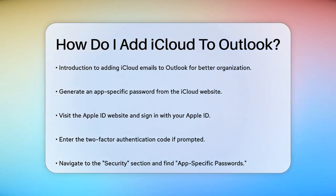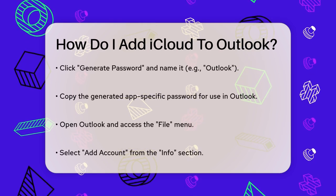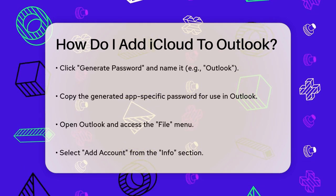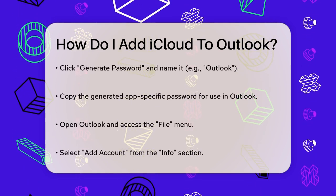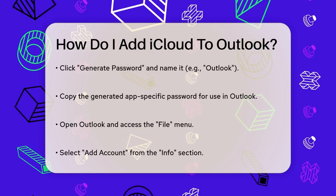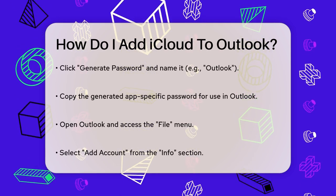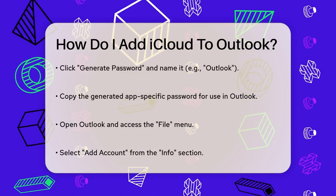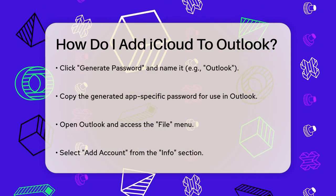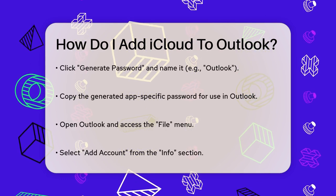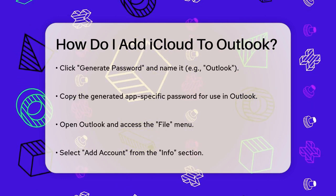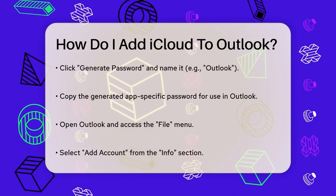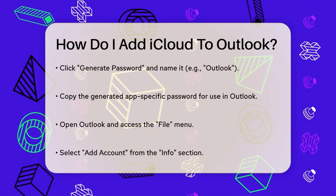Once you're logged in, scroll down to the Security section and select App-Specific Passwords. Click on Generate Password and type in a name for the password, like Outlook. Click Create and copy the generated password. This password is what you'll use in Outlook instead of your regular iCloud password.